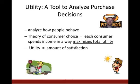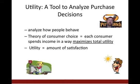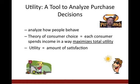Utility is a word that economists use to describe happiness or a level of satisfaction that a consumer gets when they purchase a good. We can use it to analyze purchase decisions and analyze how people behave. The theory of consumer choice is that each of us as consumers will spend our income in a way that maximizes our total utility — our total satisfaction or happiness. Utility is simply the amount of satisfaction or happiness we receive from a good.